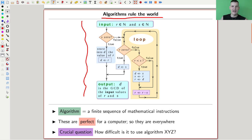And here's a blueprint of an algorithm which computes GCD of two integers. An algorithm is meant independent of the language you actually use. Then the practical implementation, I don't care about for now. But essentially, the question that motivates complexity theory is, how difficult is it to use algorithm XYZ?